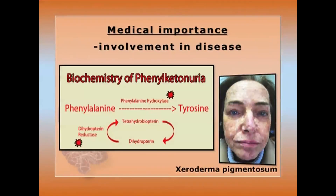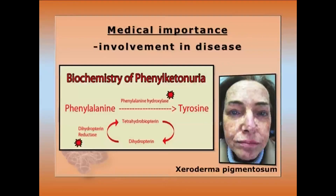Medical importance relates to disease through malfunctioning or mutation of enzymes. PKU (phenylketonuria) results from mutation of phenylalanine hydroxylase, the enzyme needed for phenylalanine degradation, giving rise to mental retardation. Germline mutations of UV repair enzymes give rise to skin cancer and Xeroderma pigmentosum, which are hereditary diseases.